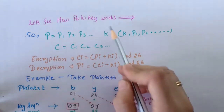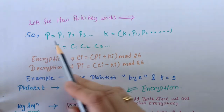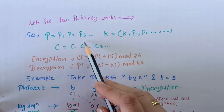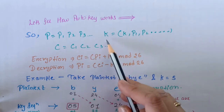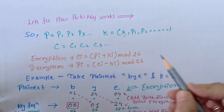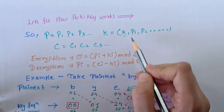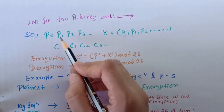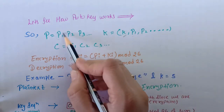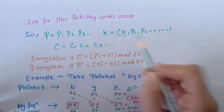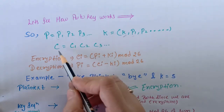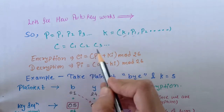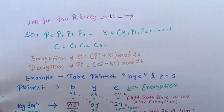We can see that the plain text is P1, P2, P3, and so on. The key starts with the predetermined key value, and the next sub key becomes the 1st plain text character, the following sub key becomes the 2nd plain text character, and so on. This gives us cipher text C1, C2, C3, and so on.